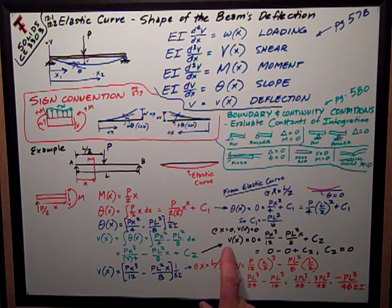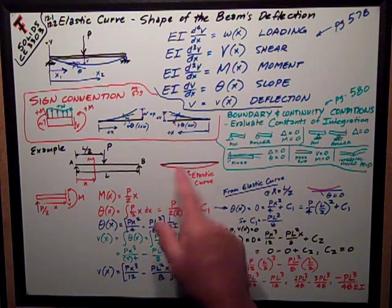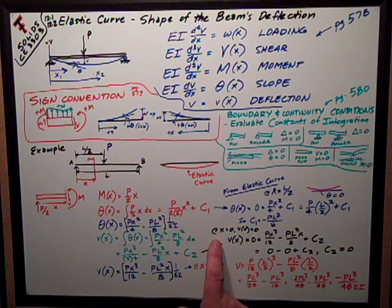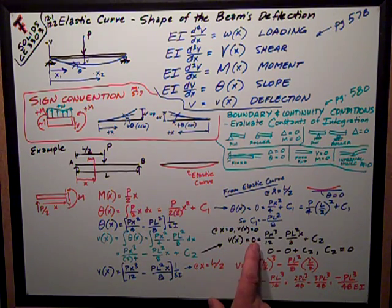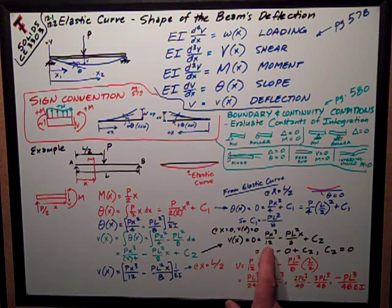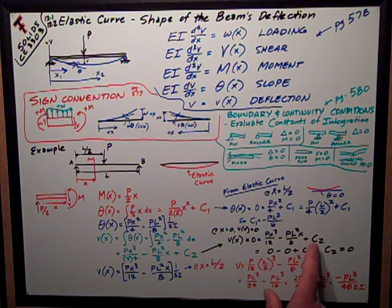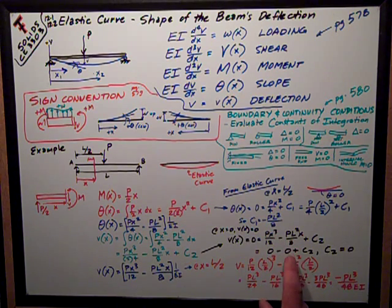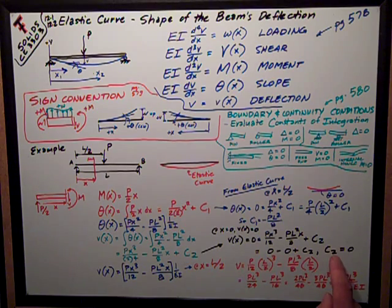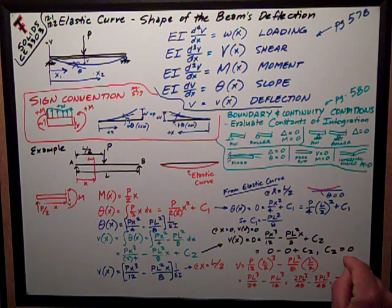Okay, I have to evaluate that one. So looking at my elastic curve, I can see an easy boundary condition is at X equals zero, my deflection is zero. So I set the equation equal to zero. Evaluate it. Put in zero for X. Both these terms go to zero. Plus C2 is equal to zero. So C2 itself equals zero.